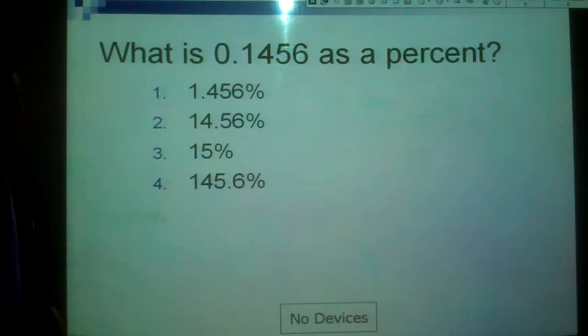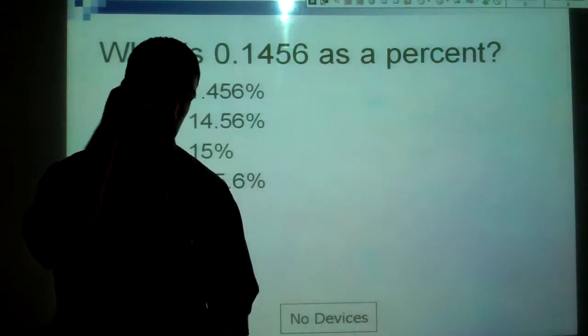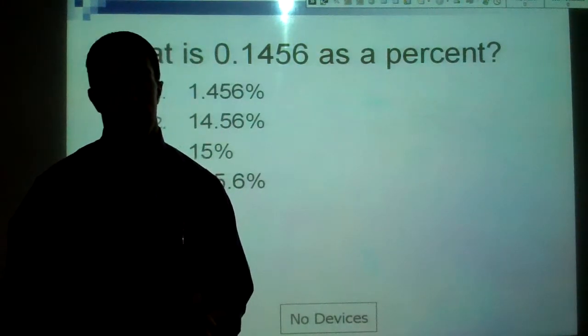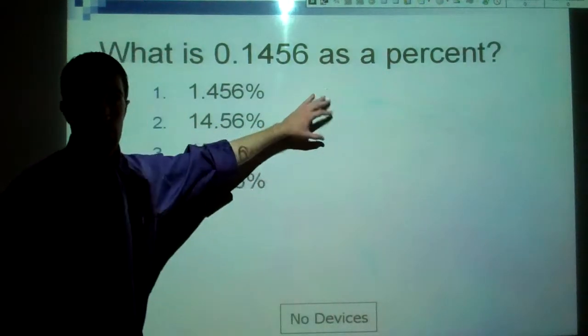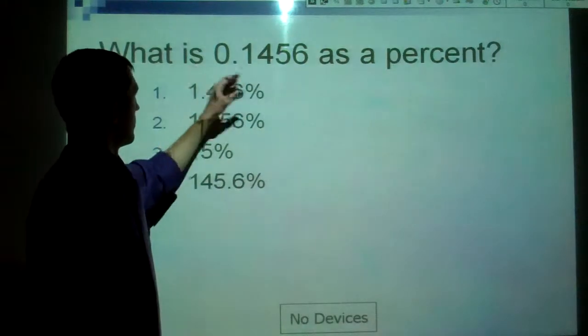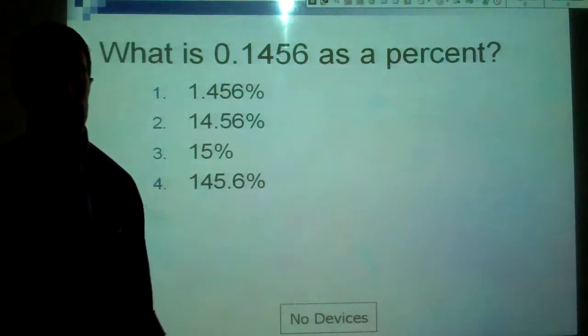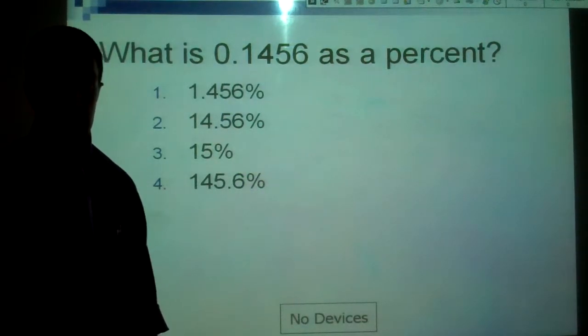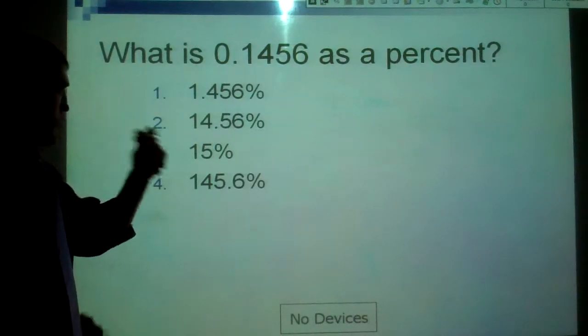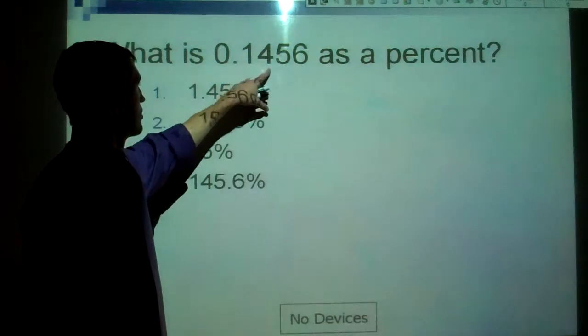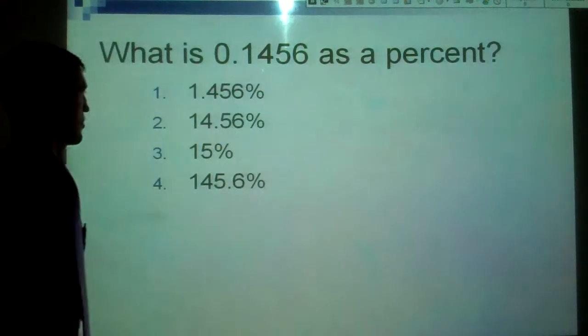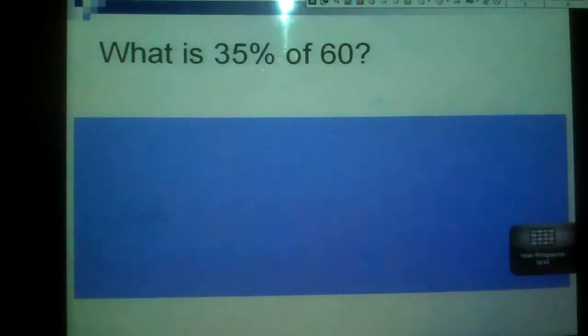Now, we're going the other way. We are going decimal to percent. Well, we're going to move our decimal point two spots. And, this time we're going to go to the right, because we're turning it into a percent. One big question I got on this one. Should we round? No, you should not, because it does not specify that you should. It doesn't say, what is this number about? Or, you know, something like that. It doesn't specify to round or give us any reason to believe that we should round. So, we move our decimal point to the right. Two spots. One, two. Fourteen point five six percent. We should be at number two here.